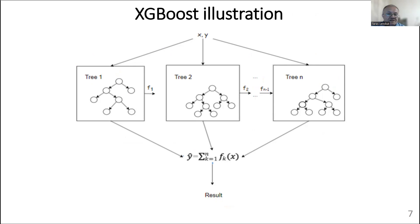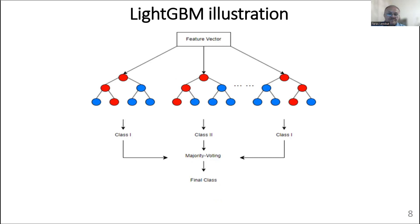XGBoost, meaning Extreme Gradient Boosting, is an effective and scalable implementation of gradient boosting. It includes a number of optimizations for speed and performance, has built-in tools to prevent overfitting, and uses histogram-based methods to reduce computational and memory consumption, making it particularly useful for processing large datasets.